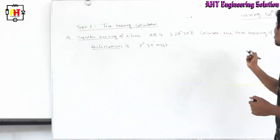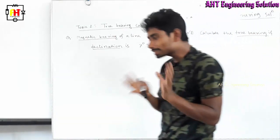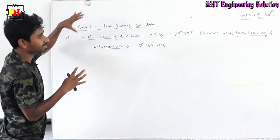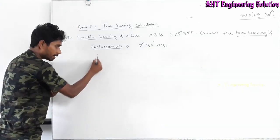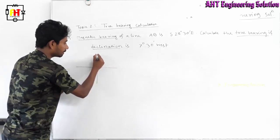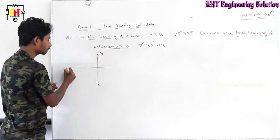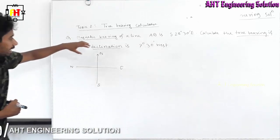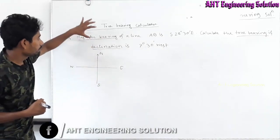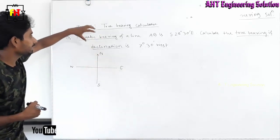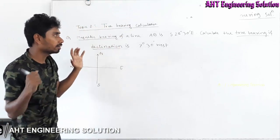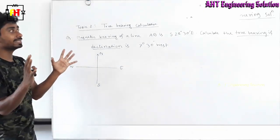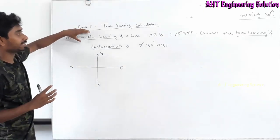Now let's look at the true bearing. This covers the three basic characteristics, and we can solve this problem. The three characteristics are the standard directions: north, south, west, and east. This is very important. It is the standard of magnetic bearing, true bearing, and declination. We can see that the magnetic bearing is very important — the magnetic bearing is measured with respect to the magnetic axis at a defined angle.